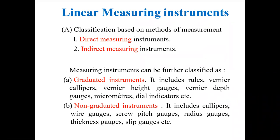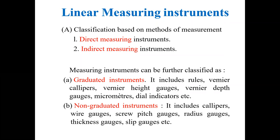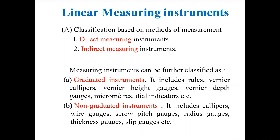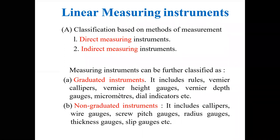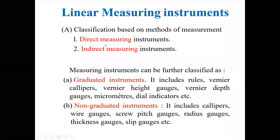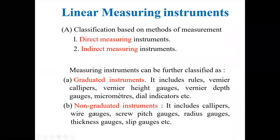An example of a direct measuring instrument is simply the scale. Indirect measuring instruments: in this case physical quantities are measured indirectly. For example, in case of a sine bar, we measure the angle using the formula sine theta equal to h by r. Here we measure the angle, but indirectly we are measuring the height of the slip gauges; by using that height we calculate the angle.